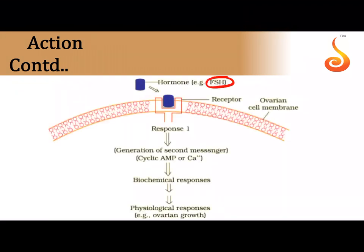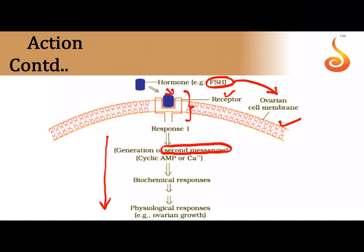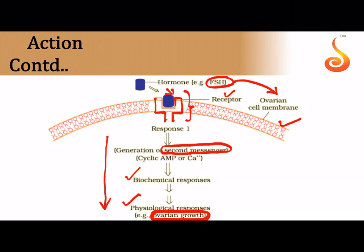For example, FSH acts on ovarian cells via a membrane-bound receptor on the cell membrane. FSH binds to the receptor, forming a hormone-receptor complex, which leads to a chain reaction inside the cell mediated by secondary messengers. This results in biochemical responses that change cellular function — in this case the ovarian cell starts multiplying and growing, ultimately leading to ovarian follicle growth.